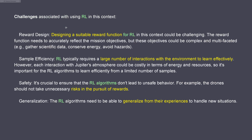Of course, we have challenges. It is really not a trivial task to design a suitable reward function for this context. You have a function that needs to reflect the mission objectives, but this could be a very complex and multifaceted thing. You want to gather scientific data, conserve energy, avoid hazards, and so on. On the other side, you have only 100 drones. You need a large number of interactions with the environment for the drones to learn their best effective paths for exploring Jupiter's atmosphere. But this can be costly in terms of energy and resources - how do you optimize for a not-so-large number of interactions with the environment?